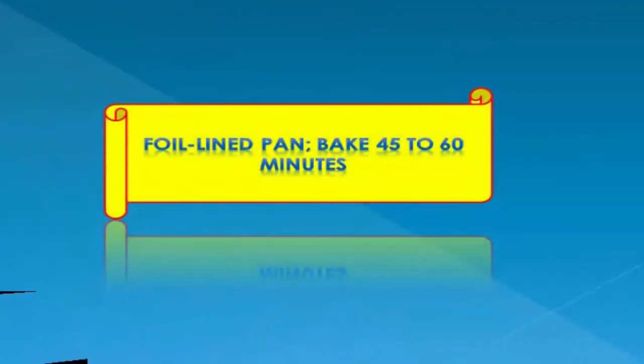to upper middle position, heat to 425 degrees. Place potatoes on a foil-lined pan, bake 45